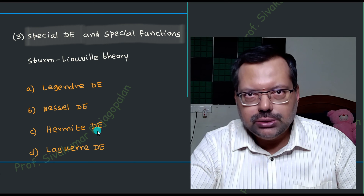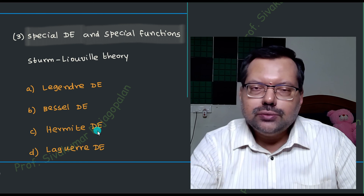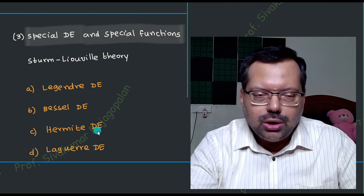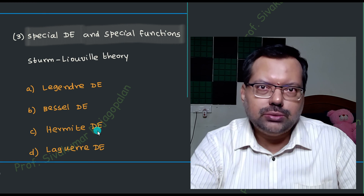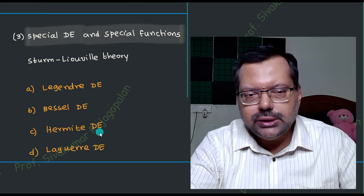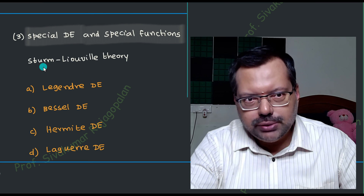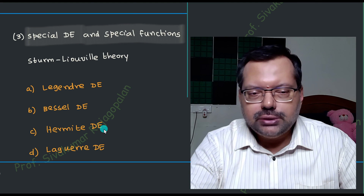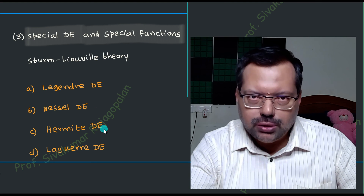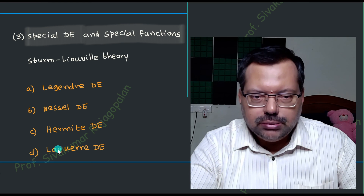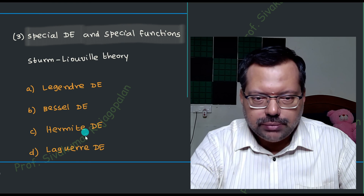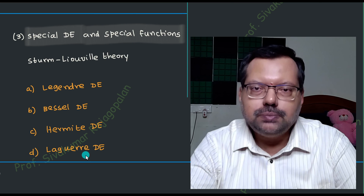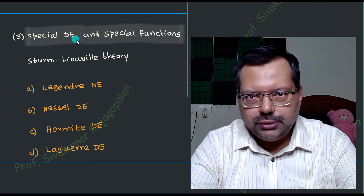The Hermite differential equation naturally arises in the case of the quantum harmonic oscillator. In the case of the classical harmonic oscillator, you have a second order ordinary differential equation, so that is not a special differential equation. The Hermite differential equation comes under Sturm-Liouville theory, and it appears when studying the quantum harmonic oscillator. Similarly, the Laguerre differential equation appears when studying appropriate physical systems.